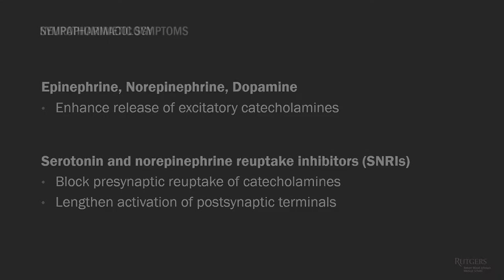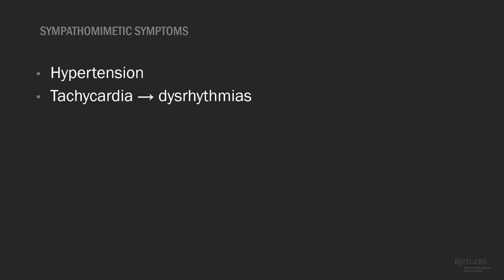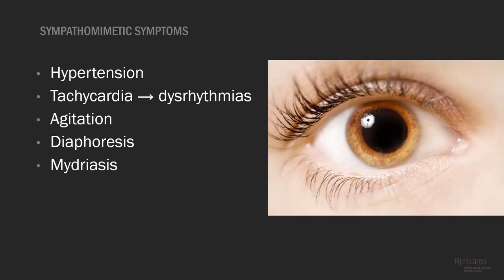Symptoms associated with this syndrome include hypertension, tachycardia — which in really severe situations can lead to dysrhythmias such as ventricular tachycardia, ventricular fibrillation, or atrial fibrillation. Patients will usually be agitated, diaphoretic, you'll get mydriasis or dilated pupils, and you can also have elevated body temperature leading to hyperthermia.